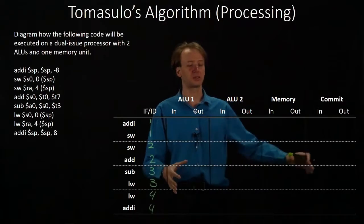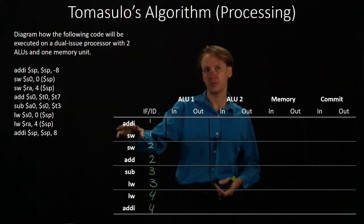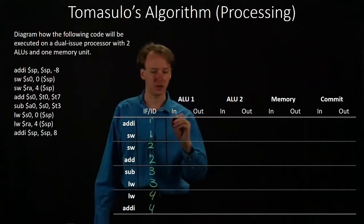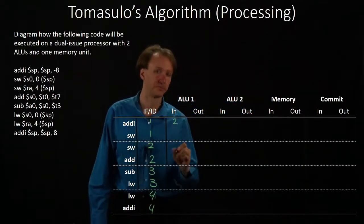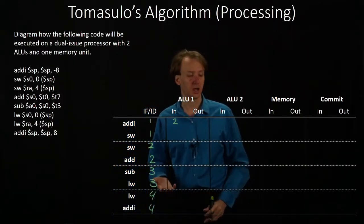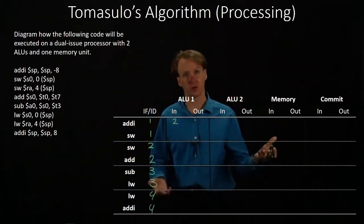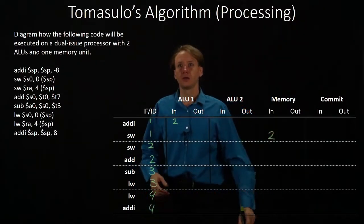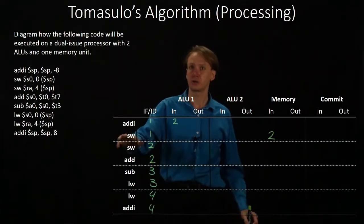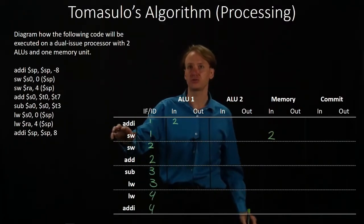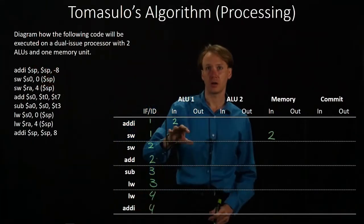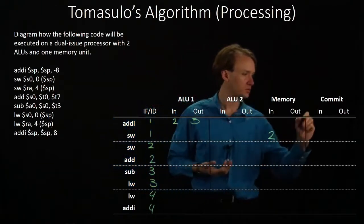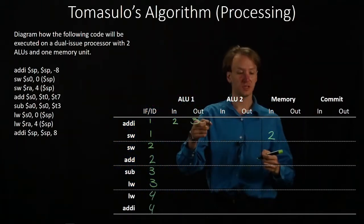Now we can focus on what happens inside. Our add immediate instruction is going to do some arithmetic — we'll send it off to our first ALU. The store word instruction, on the other hand, requires the memory unit, so we'll send it off there. There is a dependency between the store word and the add immediate instruction — they're both dependent on the stack pointer. Our add immediate instruction can run immediately since it has no dependencies, so it will be sent out on the bus at the end of cycle three.